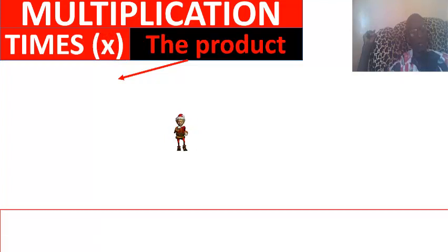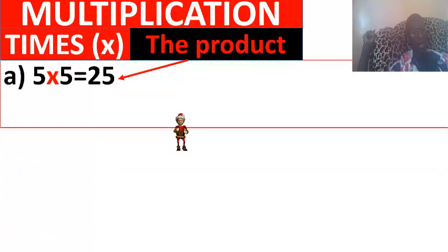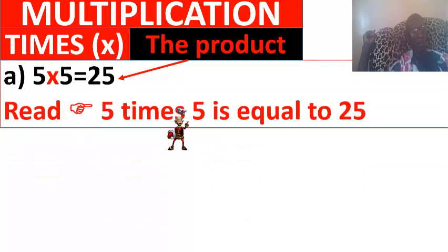The third operation is multiplication. The result found is the product. 5 times 5 is equal to 25.